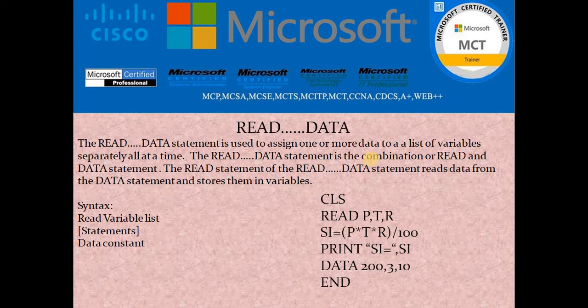Looking at the sample program: the flow in QBasic is top to bottom, though sometimes certain statements can violate this rule to meet your need. After CLS, I write READ P, T, R — this means we are declaring multiple variables with their data types. Since no suffix symbols are used, by default these are integer variables. Then on the third line: SI = P * T * R / 100. You might think there are no values for P, T, R so it will execute as zero — but that is not the case with READ DATA.